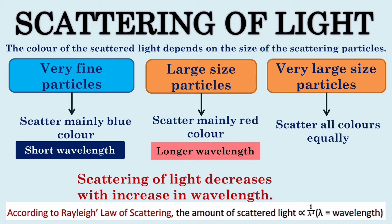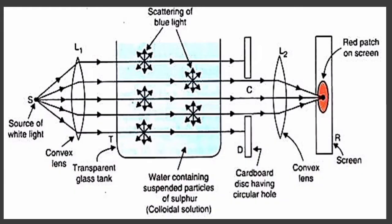In order to understand why the color of the clear sky is blue or the color of the sky is red at sunrise and sunset, let's perform an activity. In this activity, about 200 grams of sodium thiosulfate is mixed in 2 liters of clean water.